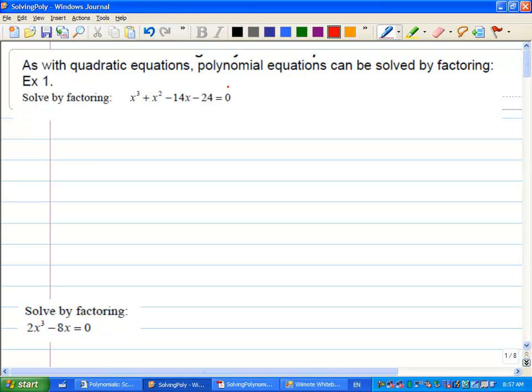So some of the possible factors we might want to use here, this would be like plus or minus 1, plus or minus 2, plus or minus 3. So there's a lot of them for this particular problem, but hopefully you have some luck and you're not checking all of those. That's for the integral roots, the whole number roots.